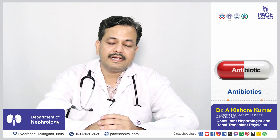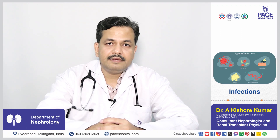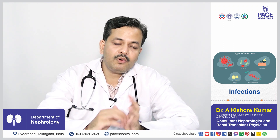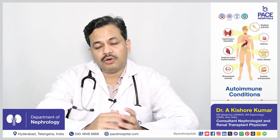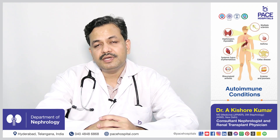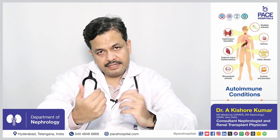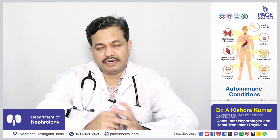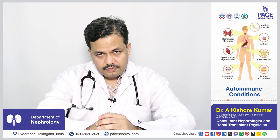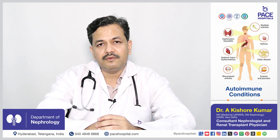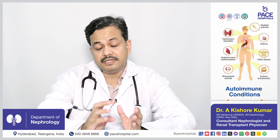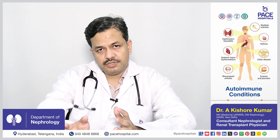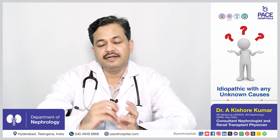The second important cause of interstitial nephritis is infections — any bacterial, parasitic, or viral infections can lead to it. The third important category is autoimmune conditions. Autoimmune means our immunity, which is self to us, is acting against us. There are conditions like systemic lupus erythematosus and many other autoimmune conditions where our body's immunity leads to interstitial nephritis. Sometimes there is no identifiable cause, which is called idiopathic.